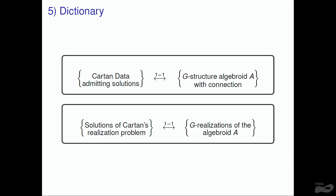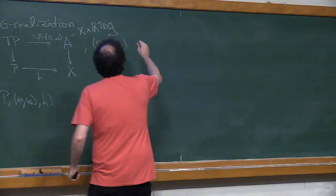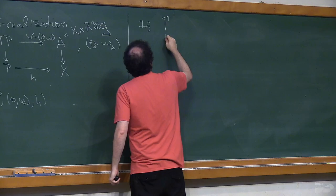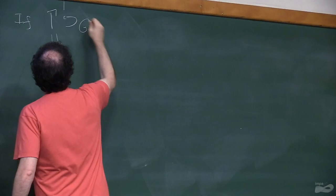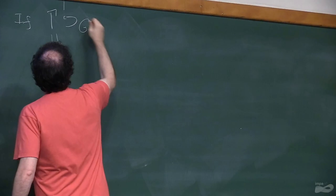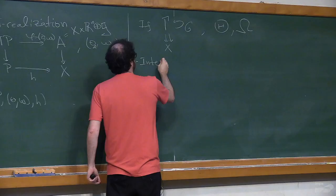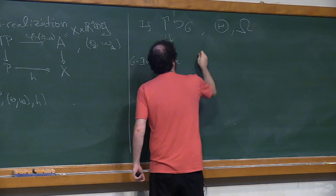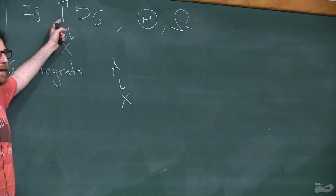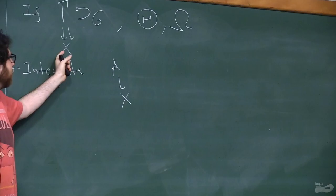Saying that phi is a morphism of Lie algebraids is the same as saying it satisfies these equations. These are G-realizations — the solutions to the problem we're looking for. Once you have a G-structure groupoid which integrates your G-structure algebraid, you automatically get solutions. If Gamma over X, with G-action and tautological form and connection omega, integrates your G-structure algebraid A over X, then this gives rise to a family of solutions parametrized by X.